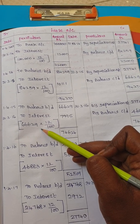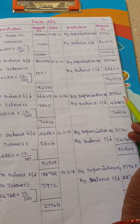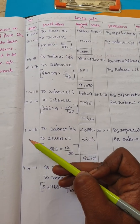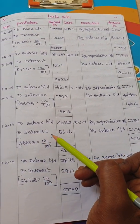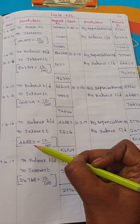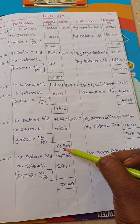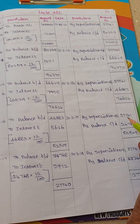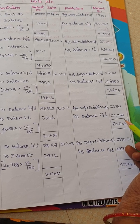Continuing for the remaining years, the annual depreciation charge remains 27,741 each year. The lease account balance reduces progressively each year as depreciation is charged. By balance carried out, the value reduces to 24,768 in the final period, as the lease is fully written off over the 5-year term.